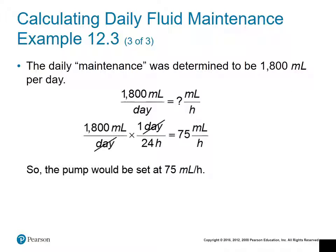The daily maintenance is 1800 milliliters per day. To convert to milliliters per hour, we multiply 1800 mL/day by 1 day/24 hours, which gives us 75 milliliters per hour. That is the rate at which the pump should be set.